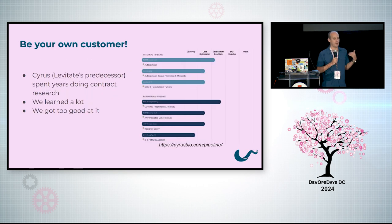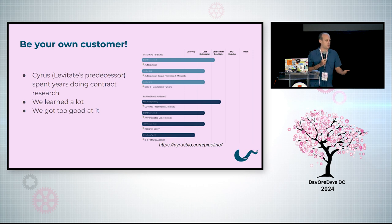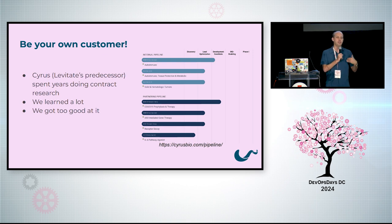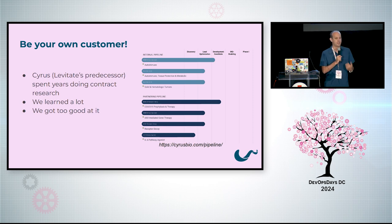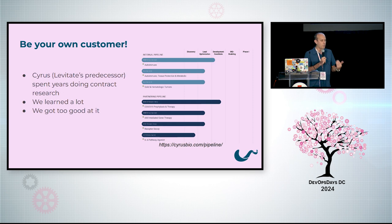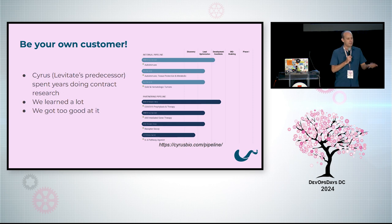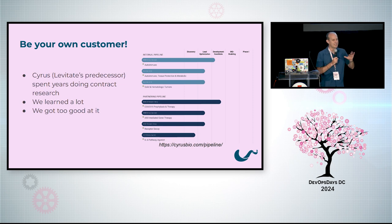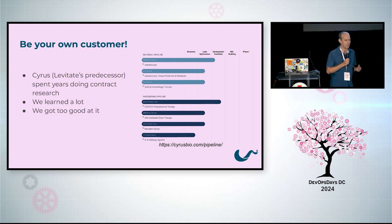The way that we did this: we're a spin-off of a company called Cyrus, and we decided we're going to be our own customer. We started working on this software around 2014 and spent years doing contract research to understand what the world of people who really do protein engineering for a living is actually like. We learned a lot of stuff that wasn't obvious and that our customers couldn't necessarily articulate to us — things we learned by doing it. We got way too good at it, and Cyrus just turned into a drug company and jettisoned its software team. That's why we're a spin-off. There is a downside to being your own customer: you can literally become your own customer, which is what happened to Cyrus.